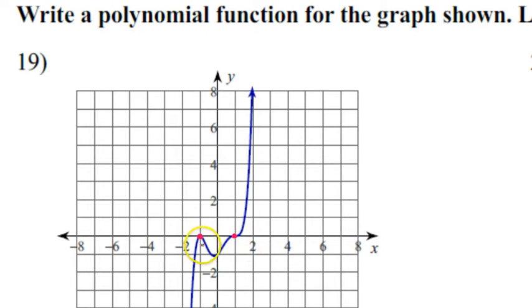Those are the only two zeros. So since I have a zero at negative one, that means I'm going to have a factor of x plus one. And because I have a zero at positive one, that means I'm going to have a factor of x minus one.